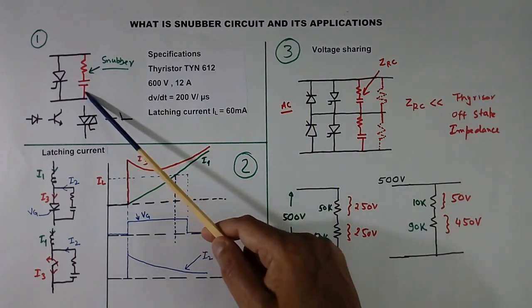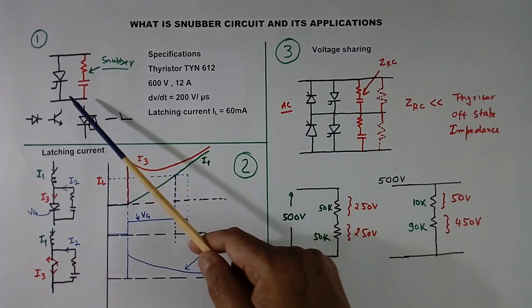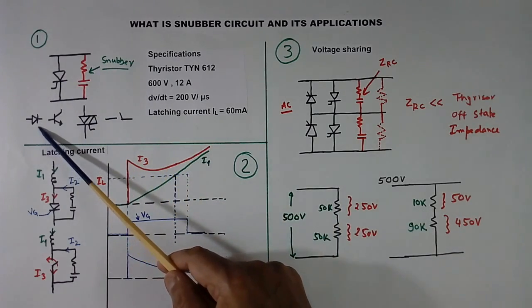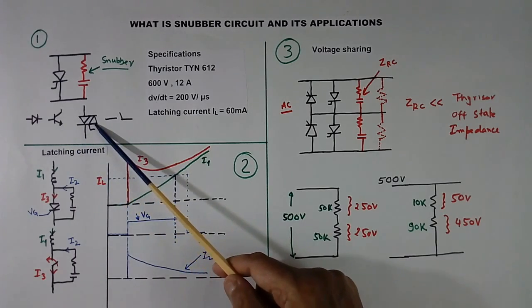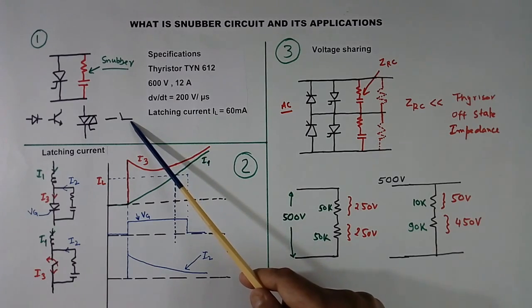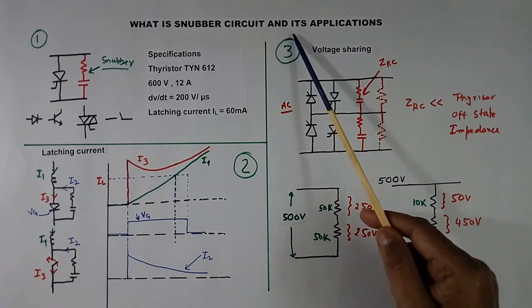Sometimes the snubber circuit is used to protect not only thyristor, but diode, transistor, TRIAC, and sometimes even switch. Now we will know what are its applications.